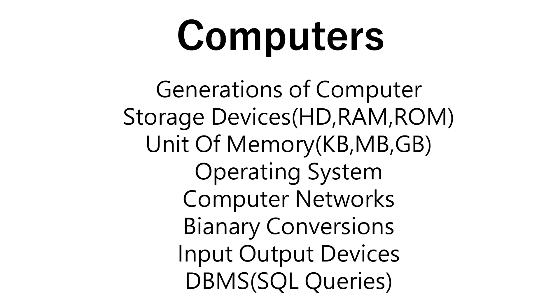For the computer section, I have made a list of all the topics you need to cover: generations of computers, storage devices (hard disk, RAM, ROM), units of memory (KB, MB, GB — how many MB equals one GB). For operating systems: scheduling, floating point representation, and types of operating systems. For computer networks: TCP/IP model, OSI model, IP addresses, HTTP, and the World Wide Web.